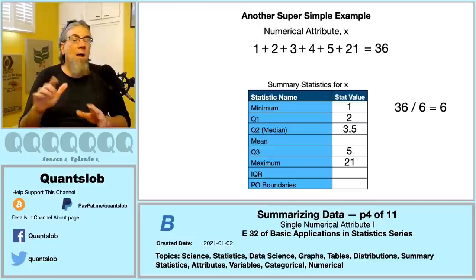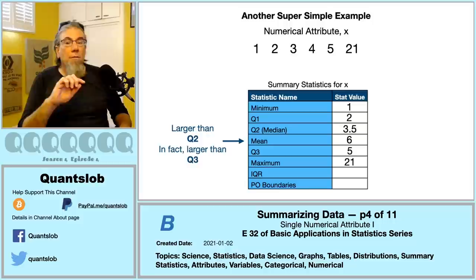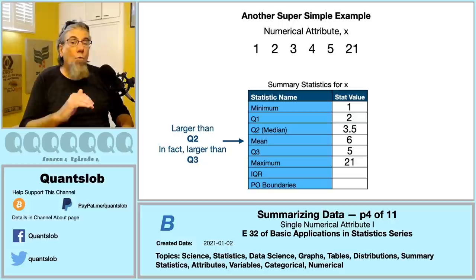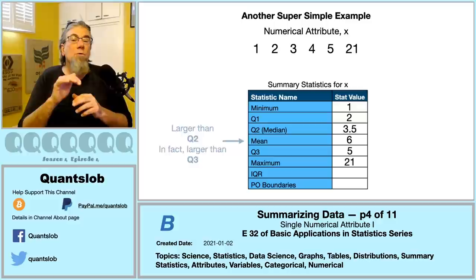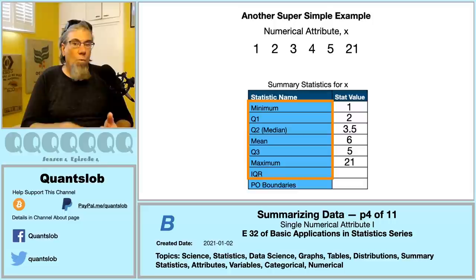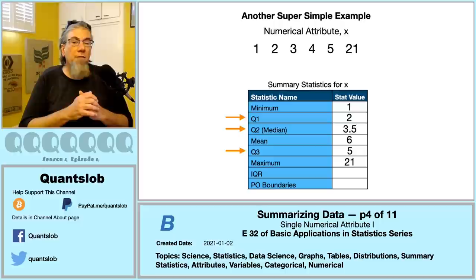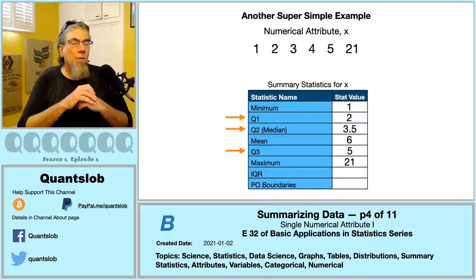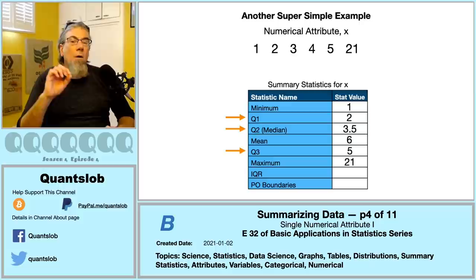Before including 21, the mean and median were the same. After adding the observation of 21, the mean is greater than the median — in fact it is now even greater than the third quartile. This is very important and we'll come back to it. Q1, Q2, and Q3 are percentiles, demarcating the 25th, 50th, and 75th percentiles respectively. With the exception of the 50th percentile (the median), there is no universally accepted way of calculating percentiles. What we've shown is probably the most commonly accepted approach.